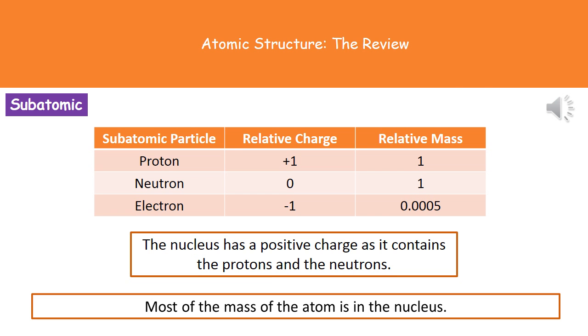We do need to know a little bit more about those three subatomic particles. The two things that we must remember are the relative charge for each and the relative mass for each. If we look at our proton first, an easy way to remember the charge is that it begins with a P and the charge is positive, so it's a +1. The P for positive and the P for proton. And it has a mass of one.